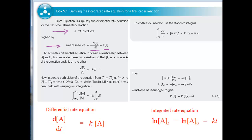The differential rate equation is a fundamental equation that describes the kinetics of a reaction and tells you the rate of reaction at a particular instant. But think about how you carry out a rate experiment — it's not possible to measure the rate of a reaction directly. What you usually do is measure the concentration of a reactant or product at different times during the reaction. So it would be really useful to have an expression that shows how the concentration varies with time. This relationship is given in the integrated rate equation, which is derived mathematically from the differential equation.